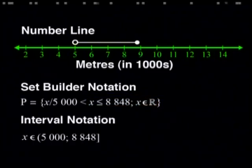Now we can also represent it in interval notation. Here, the round brackets tell us that we do not include the 5,000 and we go up to and including the 8,848 because of our square brackets.